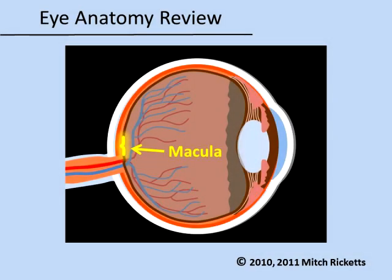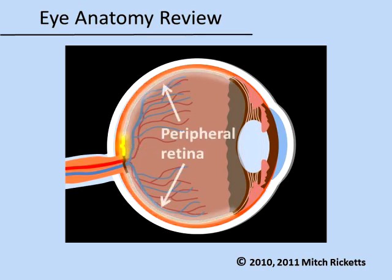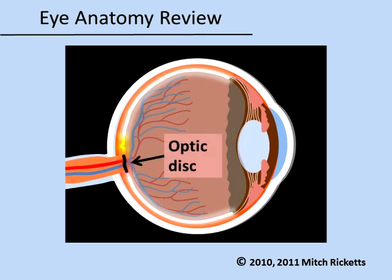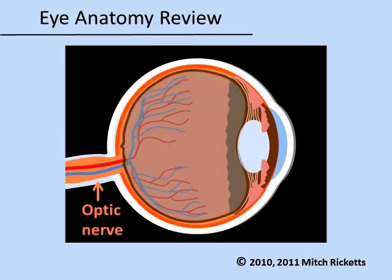The macula is a small area in the center of the visual field that is crowded with cones. The fovea is a tiny pit in the macula where cones are even more densely packed. In contrast, peripheral areas of the retina contain rods but not many cones. The optic disc is a blind spot where the optic nerve enters the eyeball. The blind spot contains no photoreceptors. Finally, the optic nerve carries impulses from photoreceptors in the retina to the brain for interpretation.